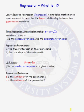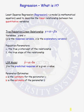In this lesson, we are going to talk about what regression is. Least squared regression, or linear regression, is a model or a mathematical equation that is used to describe the linear relationship between two quantitative variables. Two quantitative variables may have a relationship with one another, but many times it's not linear. If there is a quadratic relationship between two variables, least squared regression cannot be used to model that type of relationship. Least squared regression can only be used to model a linear relationship between two quantitative variables.